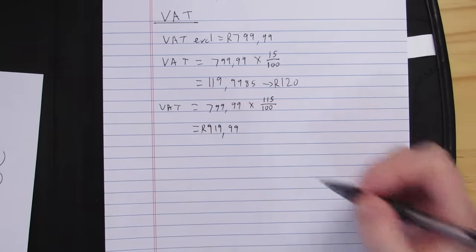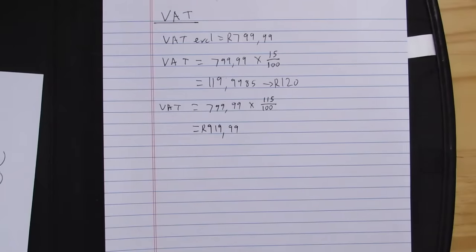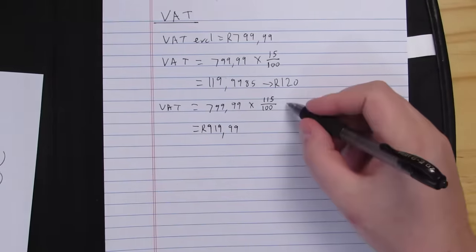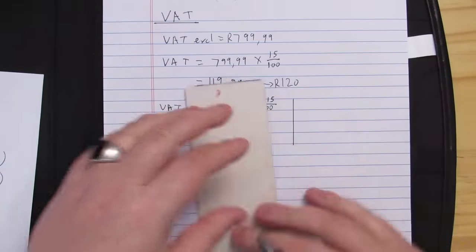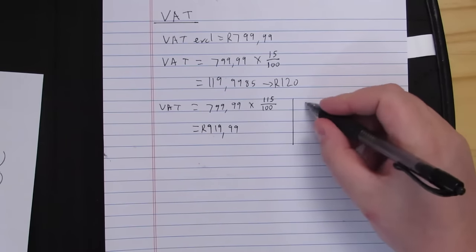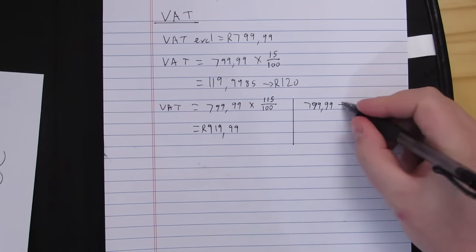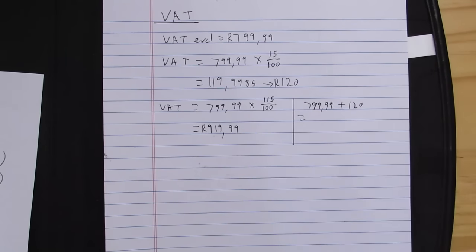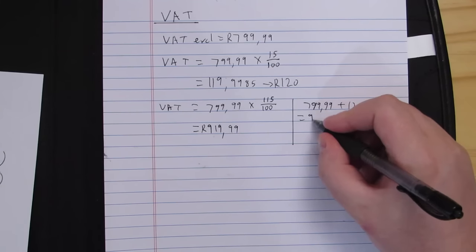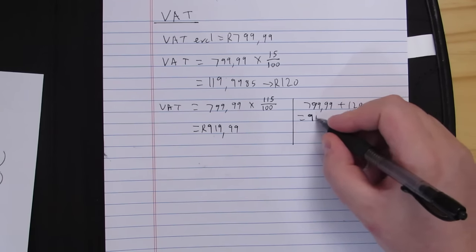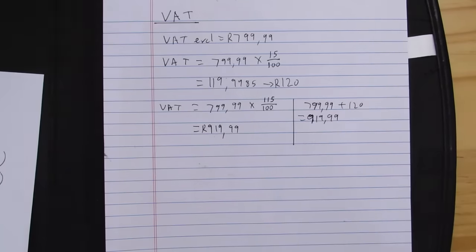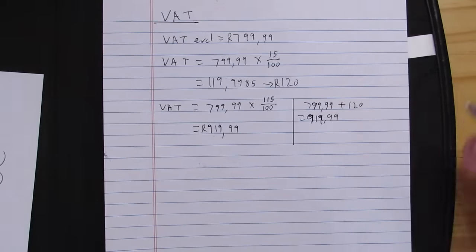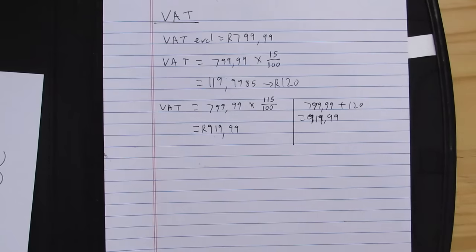That gives me 919 Rand and 99 cents. Alternatively, I could have just taken my 799 Rand 99 cents and added my 120 Rand to it, which would also give me 919 Rand 99. Either way, it's not terribly complicated.